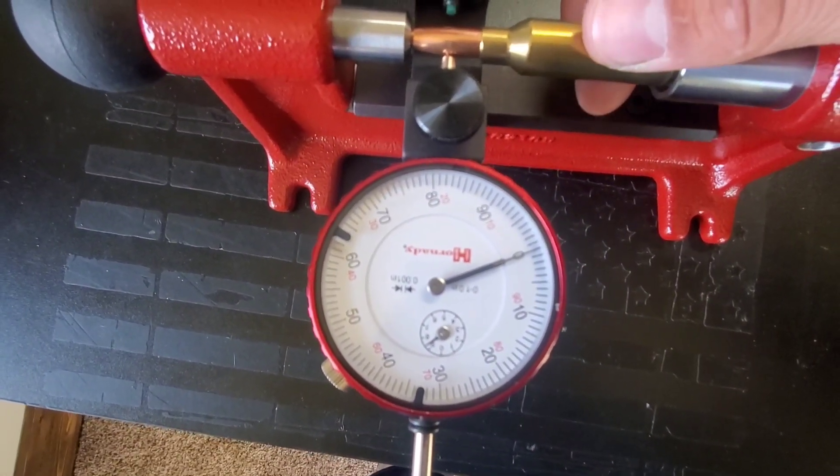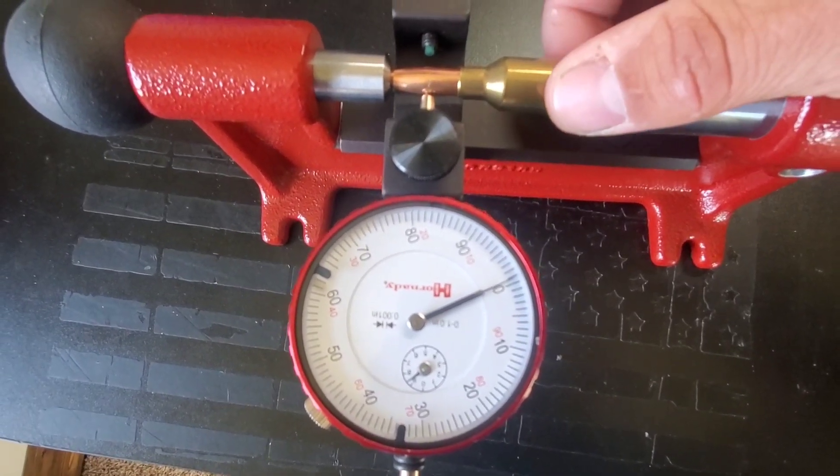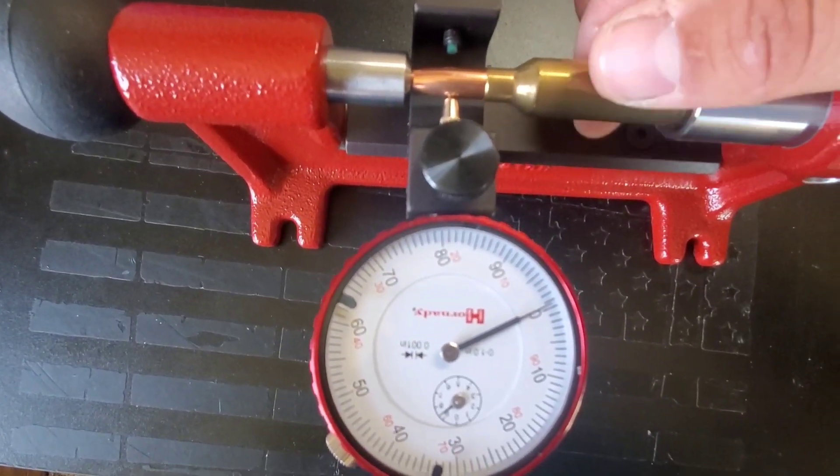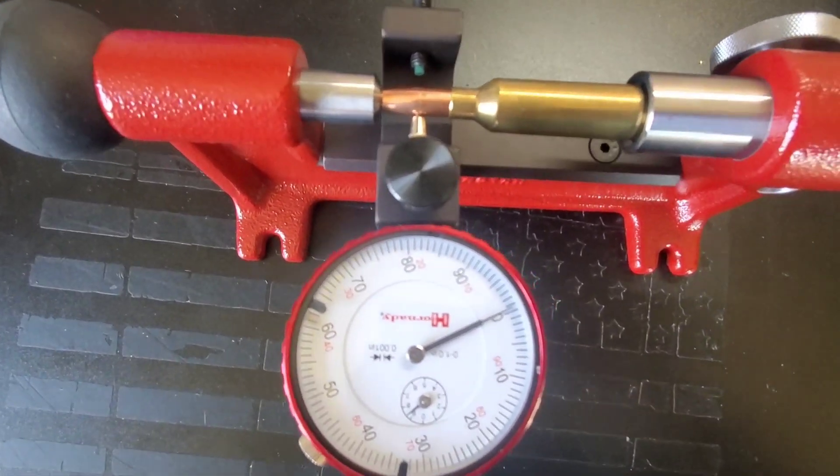And we'll check one more here. Right there about half a thousandth out of round. So that's a pretty quick look at how I throw a charge and seat the bullet - a hell of a lot quicker than the brass prep that goes along with it. But even just using regular dies and a good bullet and taking your time seating it, you can get some really good concentricity numbers.